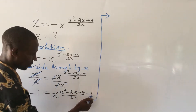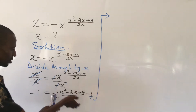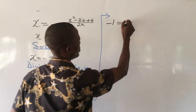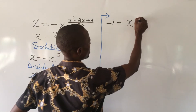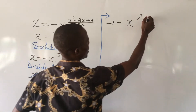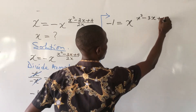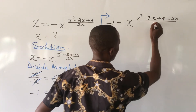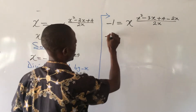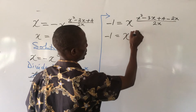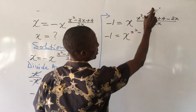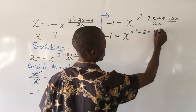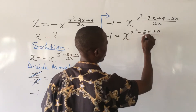So from here, this is all over invisible 1. If we carry out the simplification, this will give us minus 1 equal to x to the power of x squared minus 3x plus 4 minus 2x, all over 2x. So automatically this will give us x squared minus 5x plus 4, all over 2x.